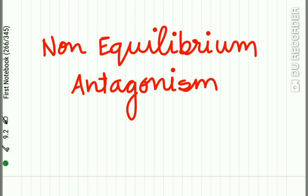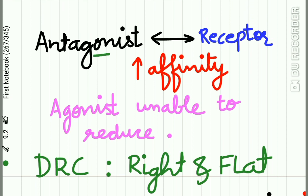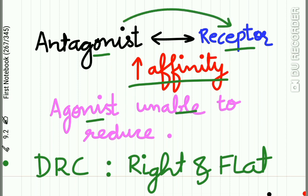One more type is non-equilibrium antagonism. In this, the antagonist forms strong covalent bonds or dissociates slowly from the receptor — in other words, the antagonist has a very strong affinity for the receptor. Agonist molecules are unable to reduce this affinity, resulting in non-equilibrium antagonism. In this type, the dose-response curve of the agonist is shifted rightward and is flat.